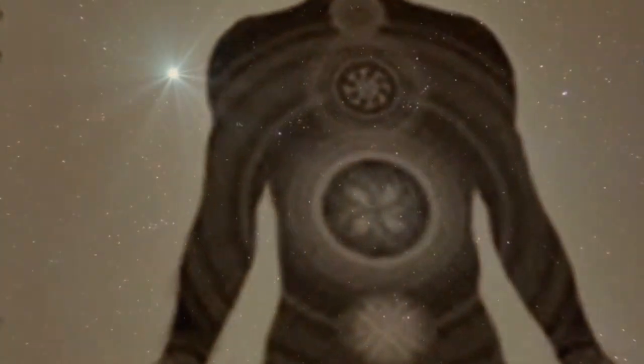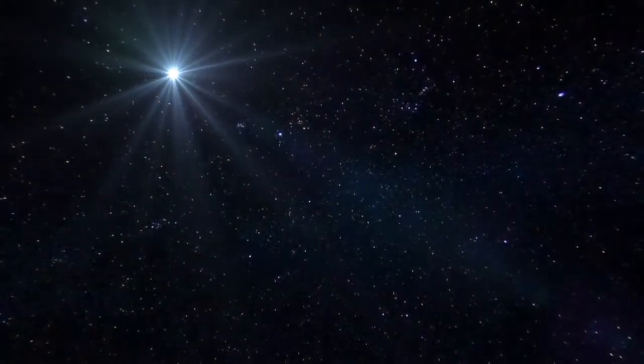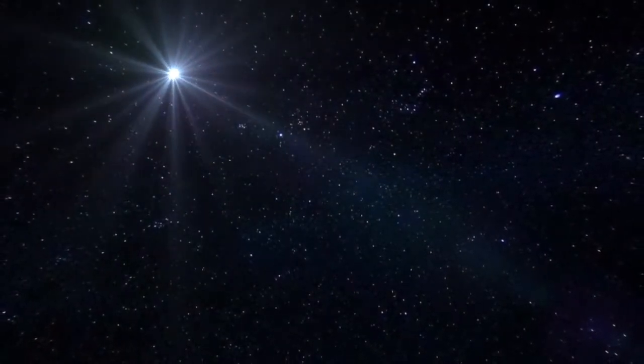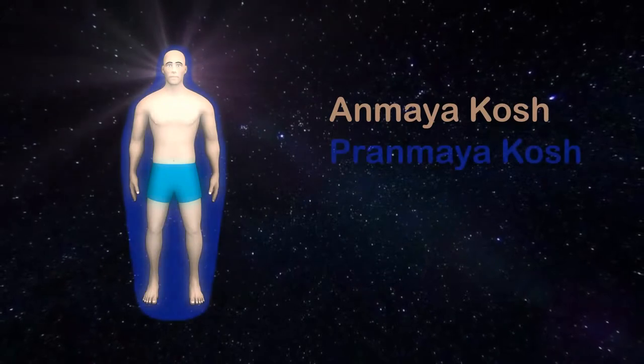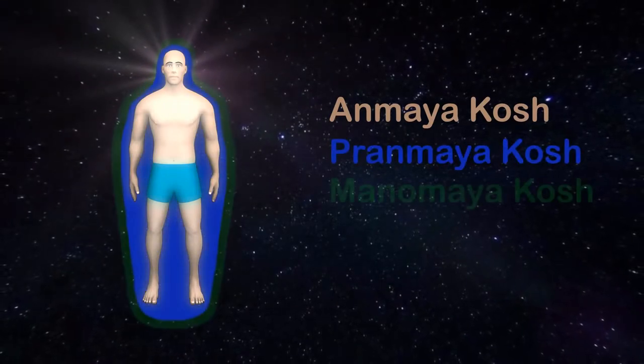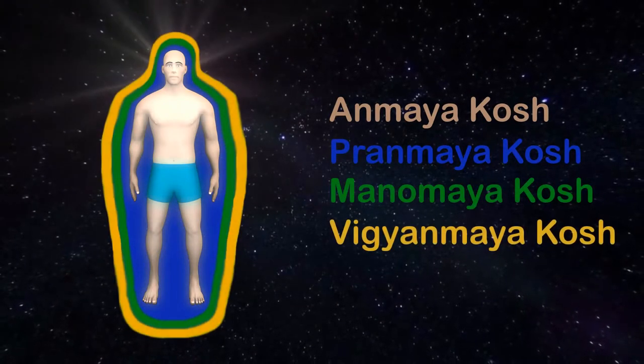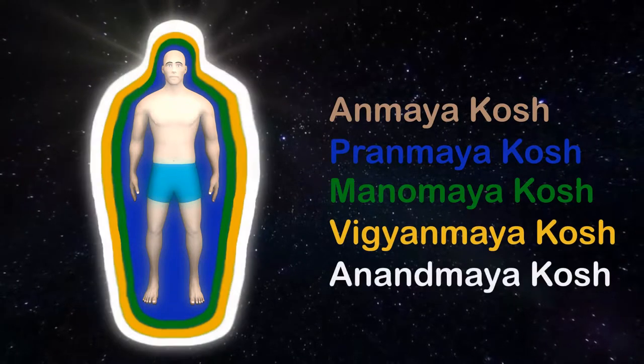The Upanishads says that we are soul covered by five layers or kosh namely, Annamaya kosh, Pranamaya kosh, Manomaya kosh, Vigyanamaya kosh and Anandamaya kosh.